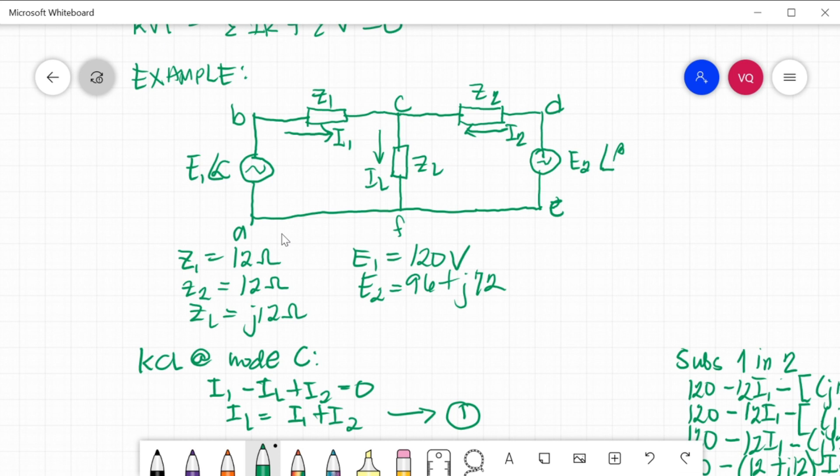We already discussed in your DC circuits that if the loop enters into a negative sign of a battery or a source, its drop will be positive. And if the loop voltage is the same as the direction of your current, the voltage drop at this impedance will be negative. If your loop will enter into a negative sign of a source, the sign of your source will be positive. And if the loop enters or it is the same as the direction of your currents, it will be negative. But if they have opposite direction, the loop, the motion of the loop and the direction of the current, the drop will have a positive drop.